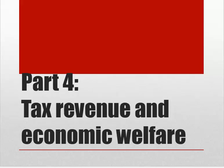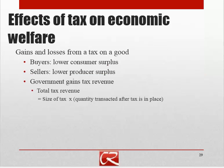Let's look at what revenue the tax will produce and what effect the tax will have on overall economic welfare. Buyers are going to be made worse off by the tax because the effective price they're paying is going up, so they have lower consumer surplus. Sellers are receiving, net of tax, a lower price, and so they're going to have lower producer surplus. But then the government gains some tax revenue, and total tax revenue is going to equal the size of the tax per unit times the quantity transacted.